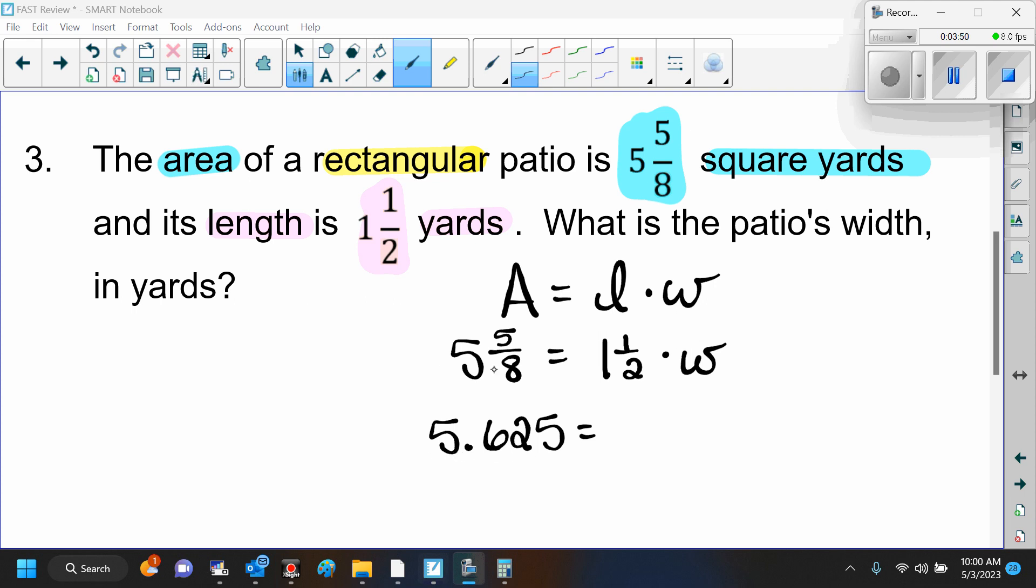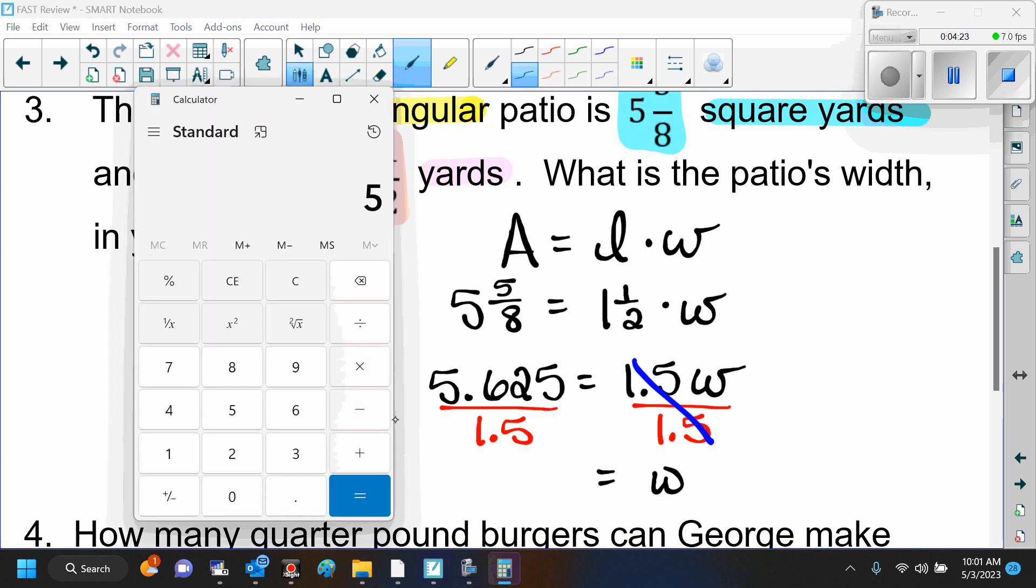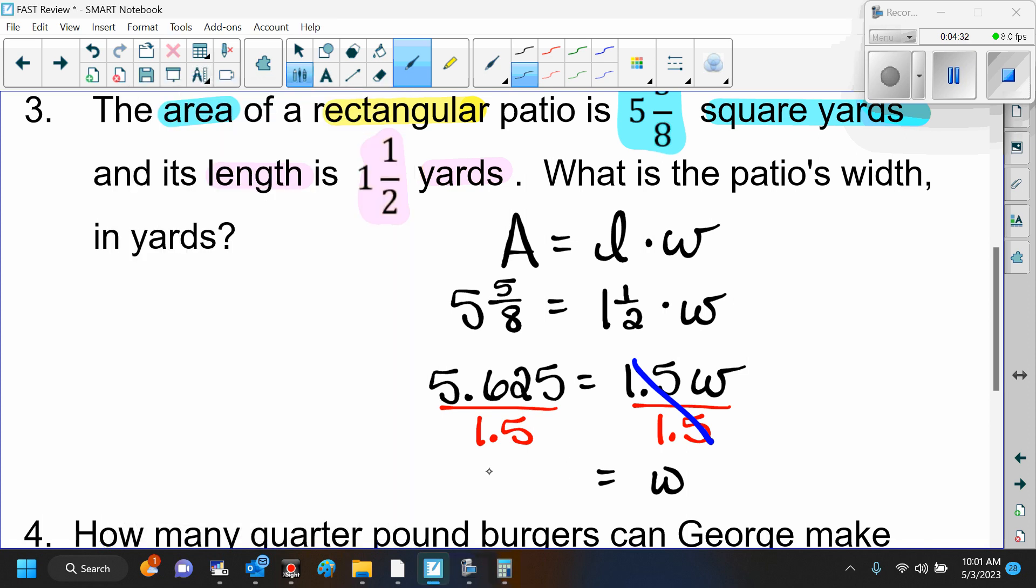We're going to put 5.625 for 5 and 5 eighths, and then for 1 and a half we can put 1.5 and then bring down that W. So now this is just a one-step equation, right? It's multiplication. So how do I solve a multiplication equation? We're going to divide on both sides by 1.5. Here those 1.5s cancel, and then we can go back to our calculator to solve. So 5.625 divided by 1.5, and that gives us 3.75.